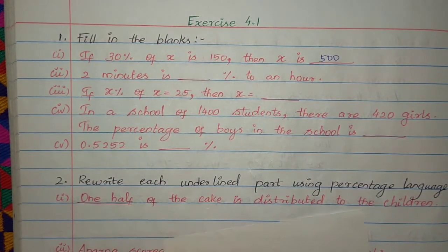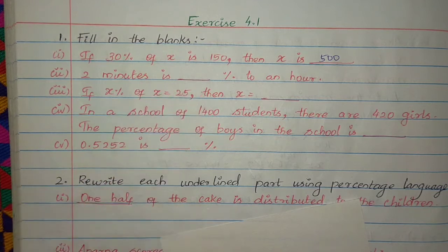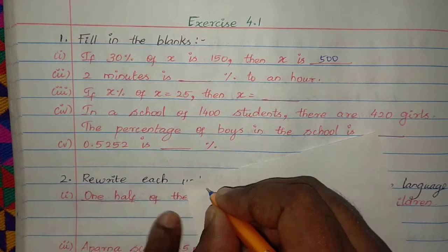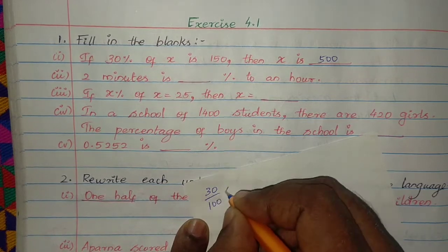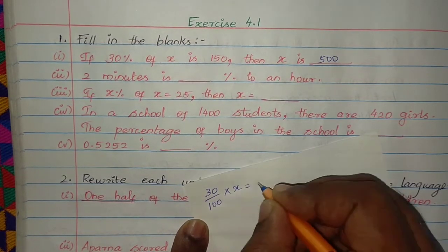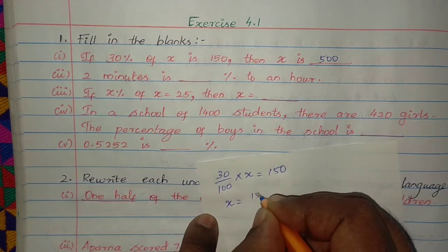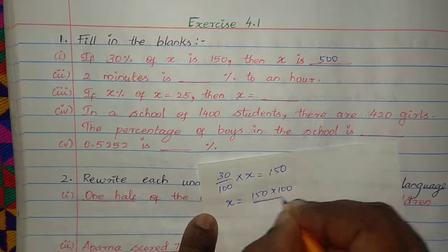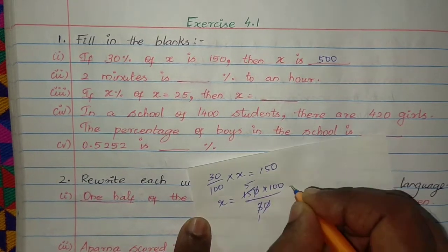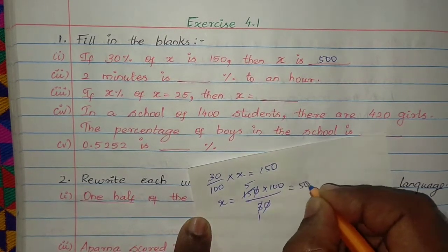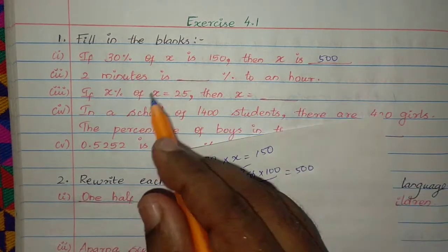Exercise 4.1, fill in the blank. If 30% of x is 150, then x is: 30 by 100 of x equals 150, so x equals 150 into 100 by 30. Cancelling zeros: 5 times 5 into 100 equals 500. So x equals 500.